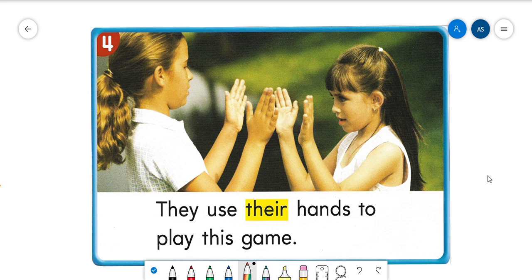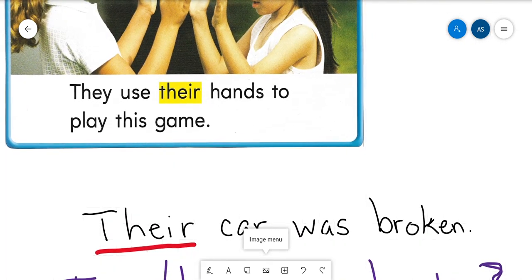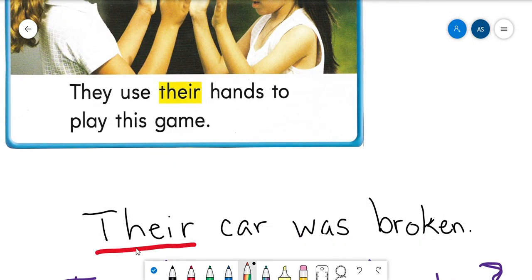I have some sentences and we're going to read them and decide if they make sense. The first one says: 'Their car was broken.' Remember, we use the word 'their' to talk about something that belongs to more than one person. The car belongs to two people and it was broken — that makes sense. I'm going to put a check mark here. 'Their car was broken' — that's the correct way to use the word 'their.'